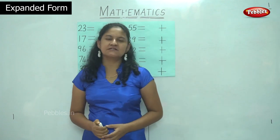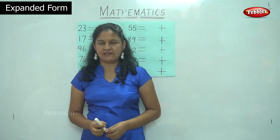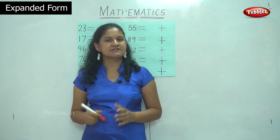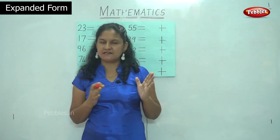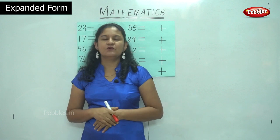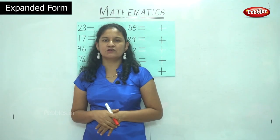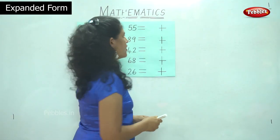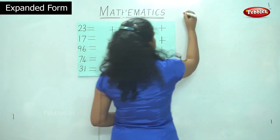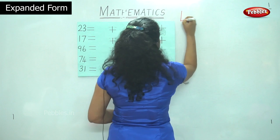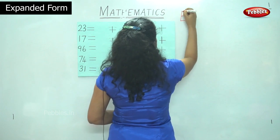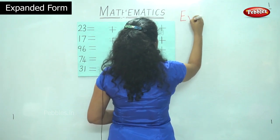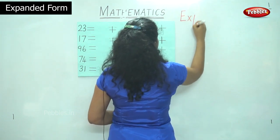As we have already learnt the place value, that is the ones and tens, we will be moving on to expanded form. So it is called the expanded form.